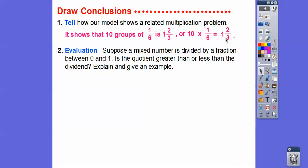And then suppose a mixed number is divided by fractions between 0 and 1. So think of a fraction like 1/2. So is the quotient, the quotient is the answer, is the answer greater than or less than the dividend? The dividend is the number that we started with. So suppose that a mixed number, the number that we start with, is divided by a number between 0 and 1, like 1/2. Is our answer going to be less than or greater than the quotient?